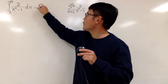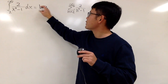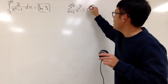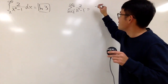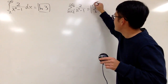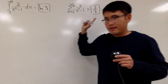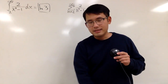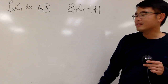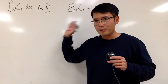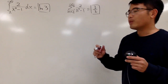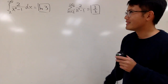The answer to this one right here is natural log of 3, and the answer to this one right here is just 3/2. They both converge, but they converge to different values. Let's see how we can actually figure out the values.